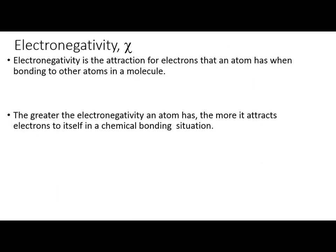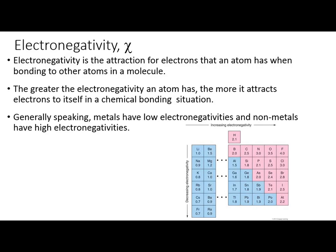We already covered what electronegativity is. For the exercise, you'll want to refer to these electronegativity values — sometimes called Pauling values. The higher the electronegativity, like 4.0 for fluorine, means that atom is saying 'give me all your electrons.' A low electronegativity, like cesium, means 'go ahead and take my valence electrons.'